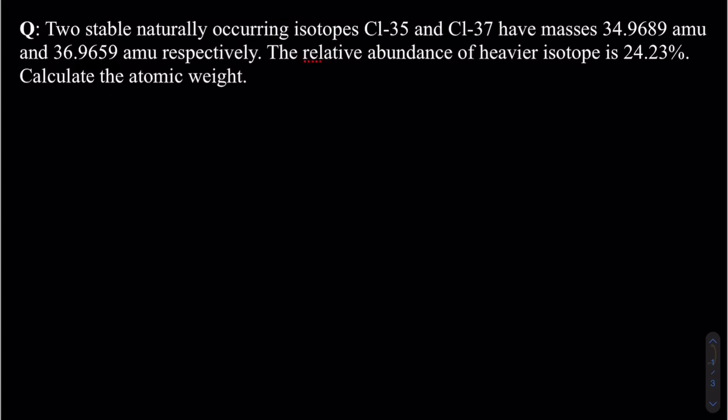So let's start off with this question. It says two stable, naturally occurring isotopes of chlorine-35 and chlorine-37 have masses 34.9685 atomic mass units and 36.9659 atomic mass units respectively. You're given the relative abundance of the heavier isotope, which is 24.23%, and you have to figure out the atomic mass.